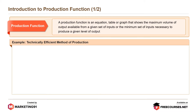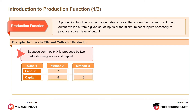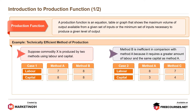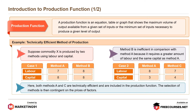Technically efficient method of production. Suppose commodity X is produced by two methods using labor and capital. Method B is inefficient in comparison with method A because it requires a greater amount of labor and the same capital as method A. In method A, the labor is 7 in case 1 and in case 2, labor is 8. Both methods A and C are technically efficient and are included in the production function. The selection of methods is then contingent on the prices of factors.